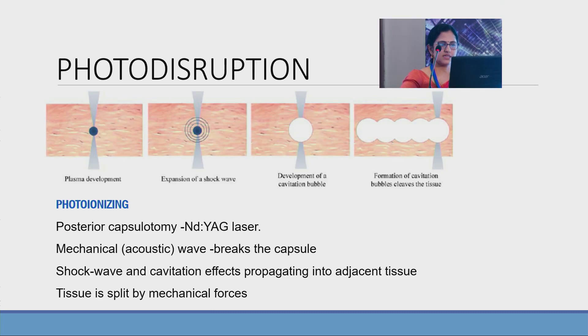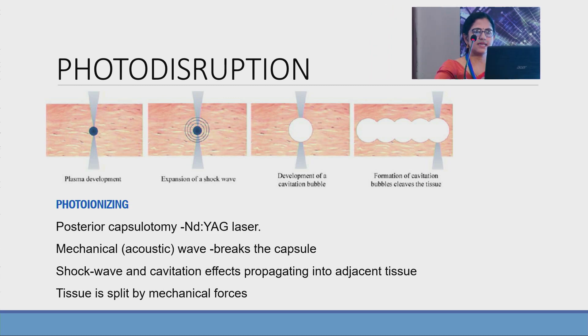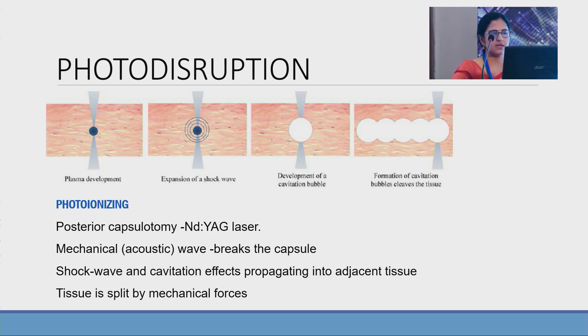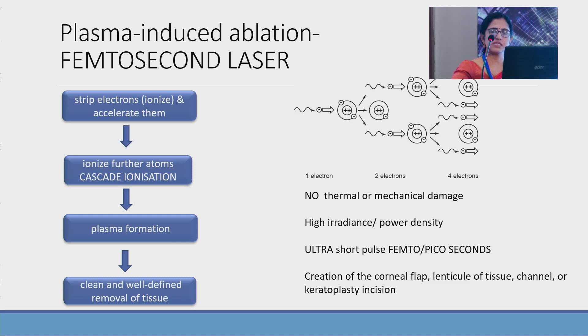Next is photodisruption. It's otherwise known as photoionization. The example is Nd:YAG laser posterior capsulotomy. Here shock waves and cavitation bubbles are produced that leads to mechanical splitting of the tissue. That is different from the newer plasma induced ablation that is seen in femtosecond.